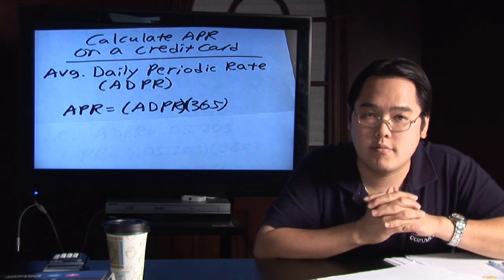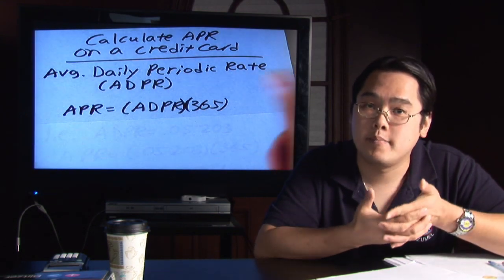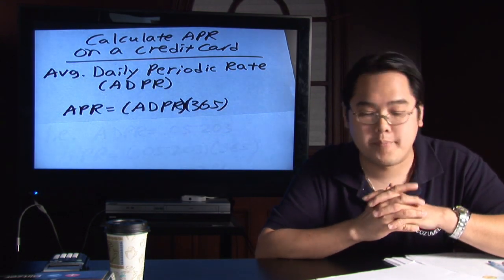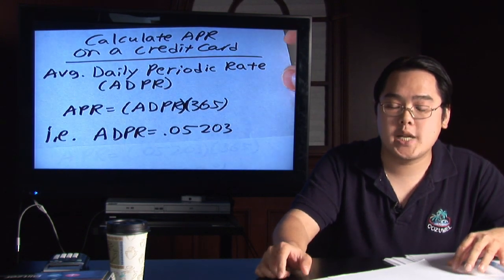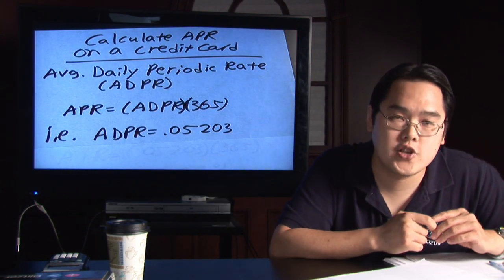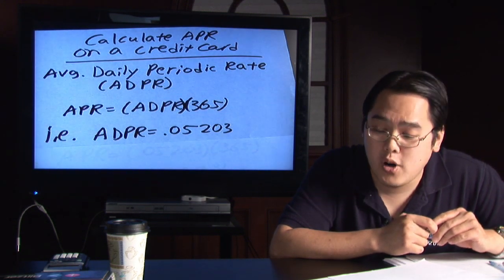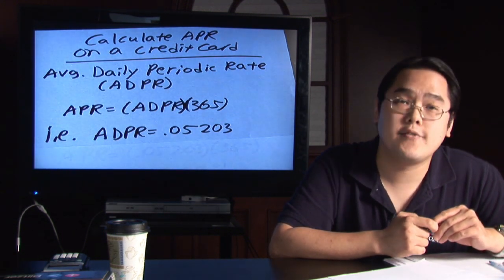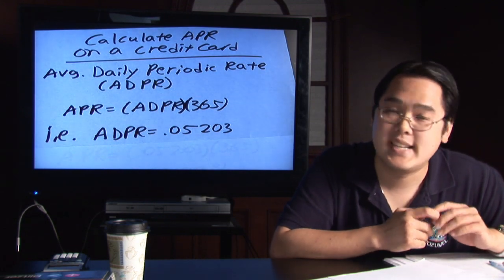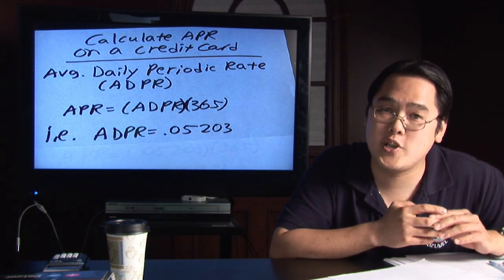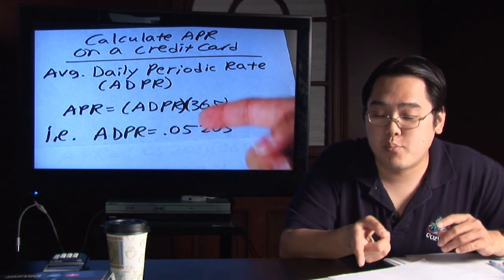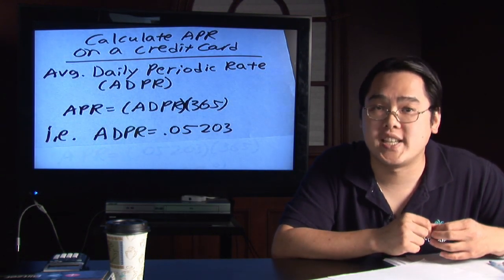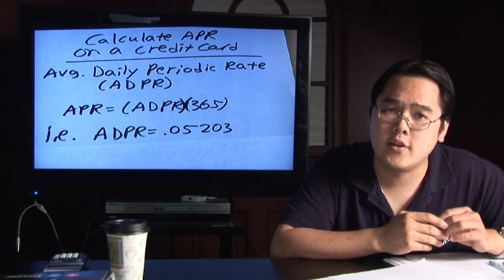Different credit card statements will have different ADPRs but let's just do one as an example for you. Suppose at the very bottom of your credit card statement you see that the average daily periodic rate is something that's small, .05203. Sounds very small, doesn't sound like you're being charged a lot of interest but that is per day. That is .052% per day. Doesn't sound like a lot but here's the big picture.